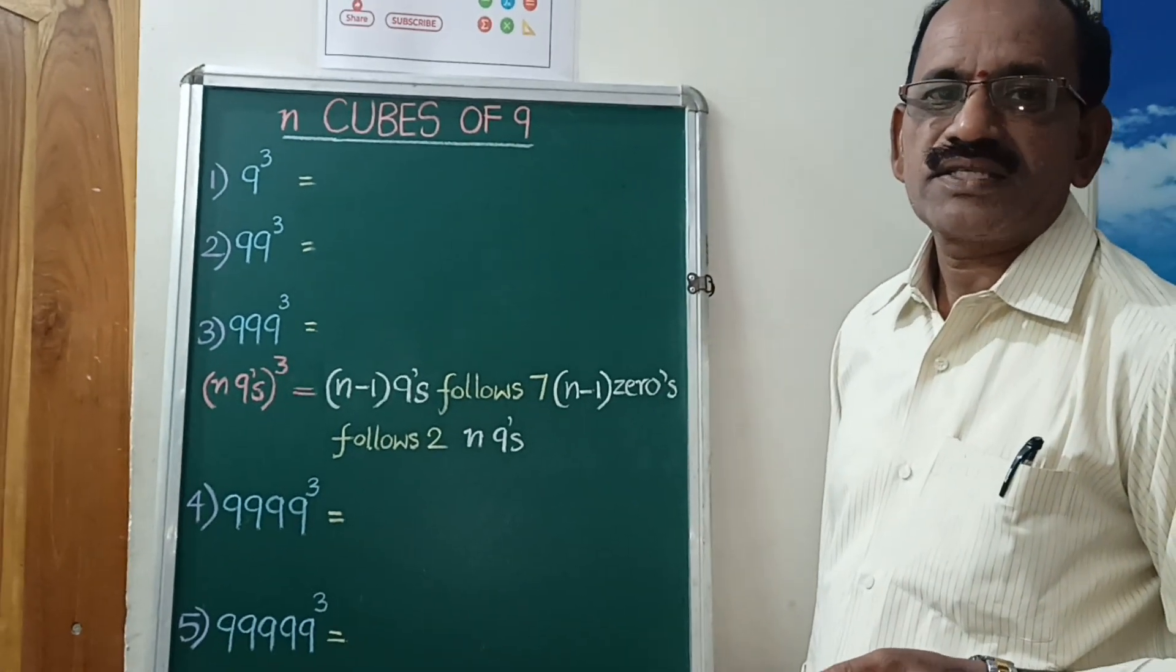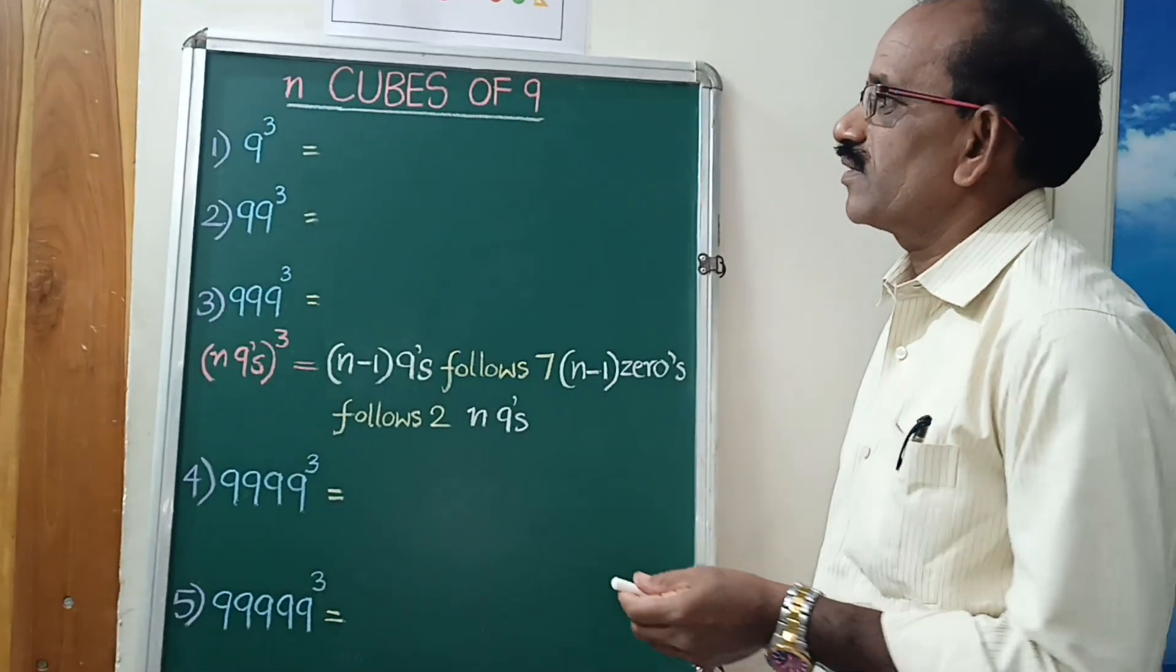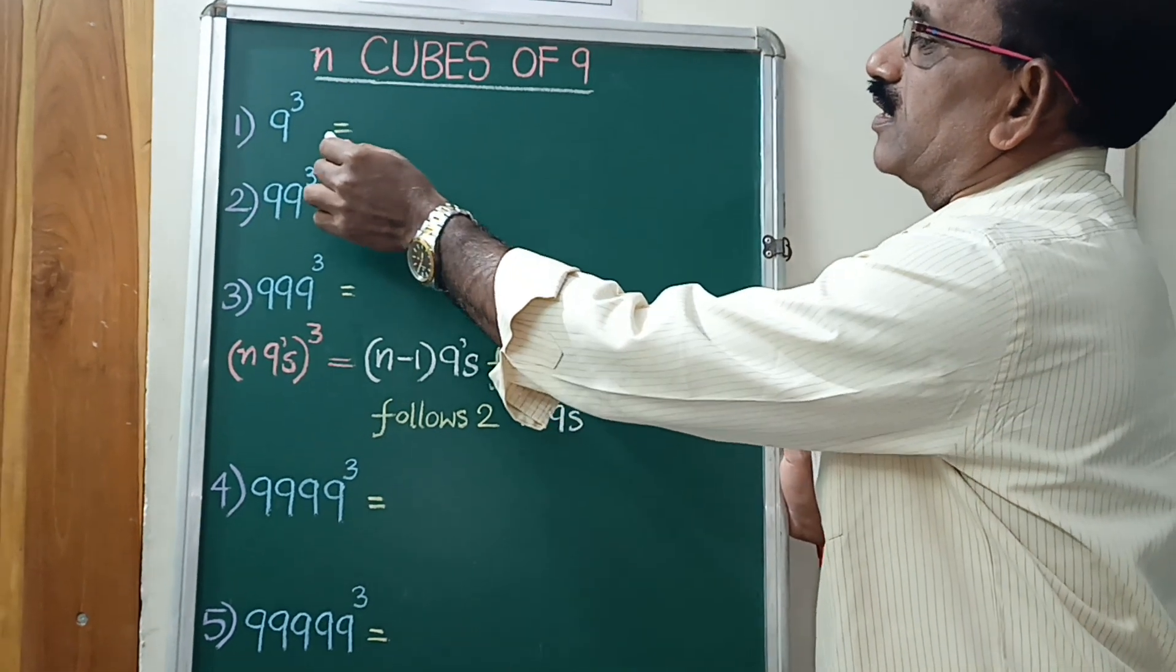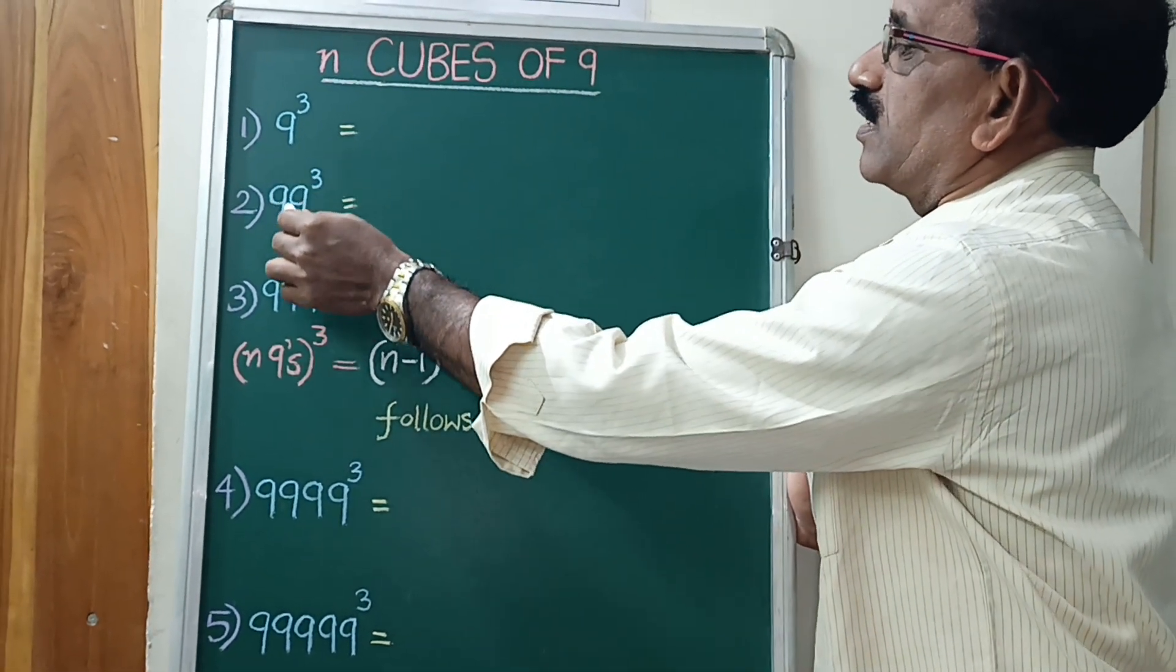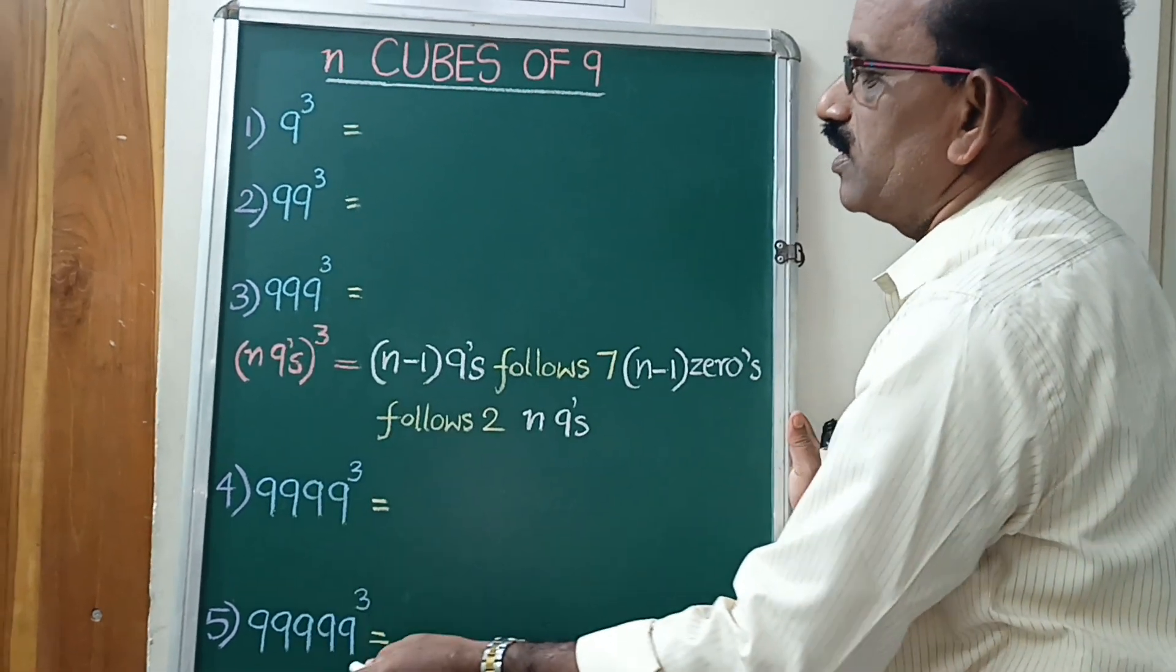Welcome to Vedic Maths and Speed Maths by Ramara Gongada. N cubes are for 9, that means 9 cube, 99 cube, 999 cube and so on.